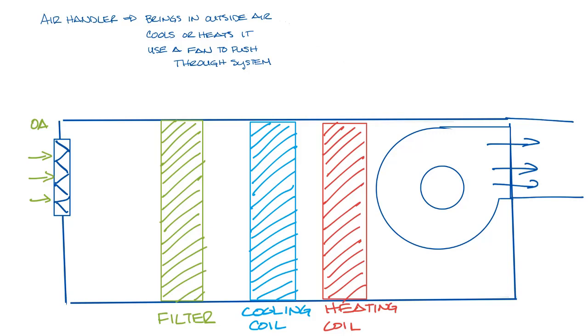After the fan, the air leaves the air handler and goes into the system. So at minimum, with a filter, some coils, and a fan, you have an air handler.